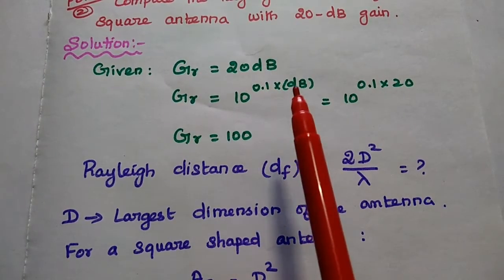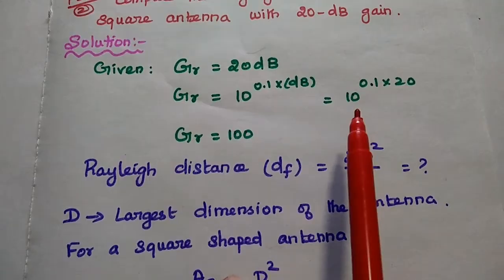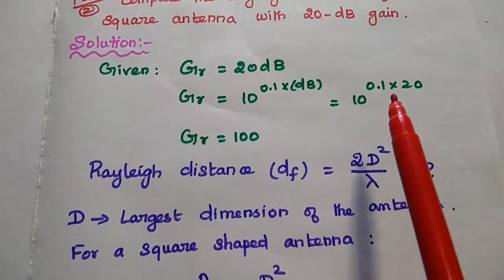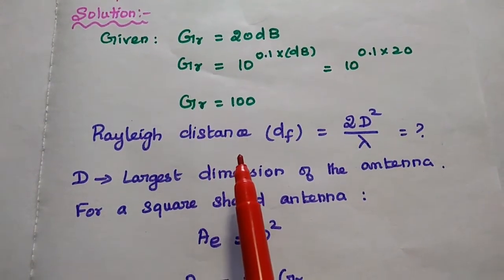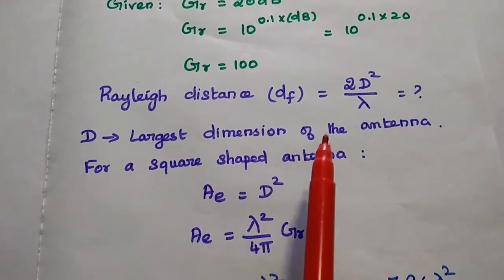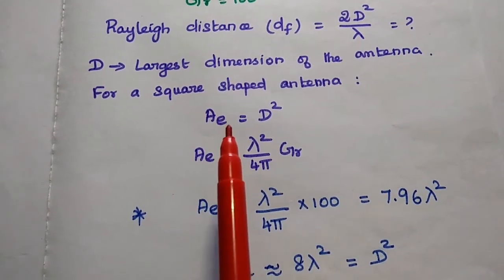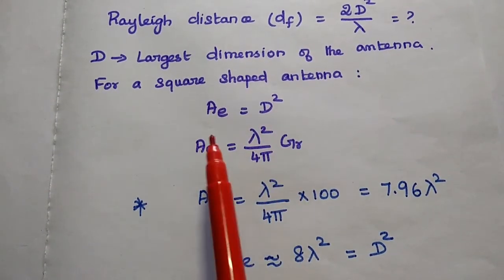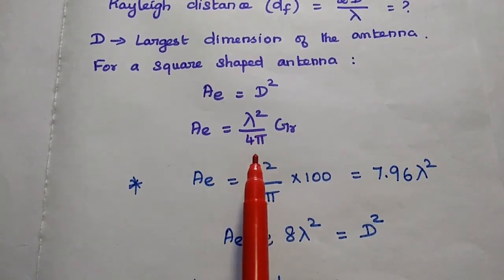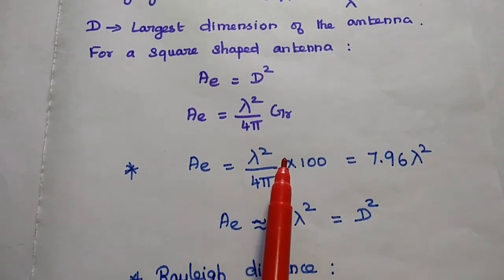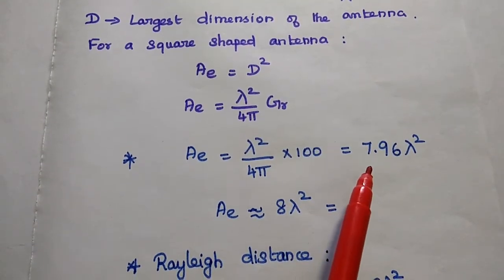We have to convert the dB value into a linear value using the formula 10^(0.1 × dB value). Substituting: 10^(0.1 × 20) = 10^2 = 100 in linear scale. Next, we are going to find the Rayleigh distance using the formula df = 2D² / λ, where D is the largest dimension of the antenna.